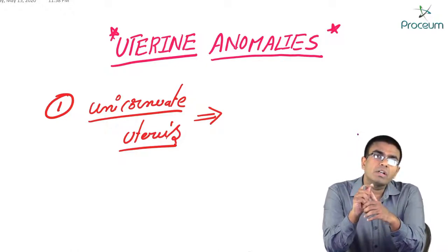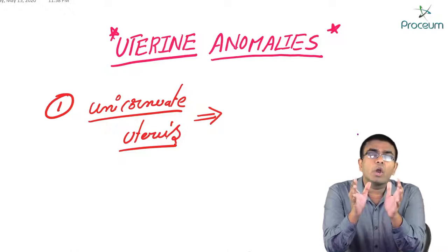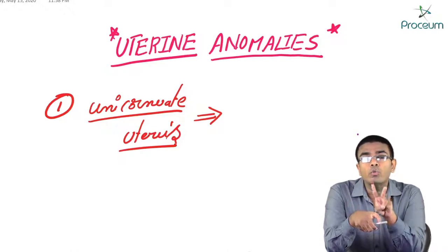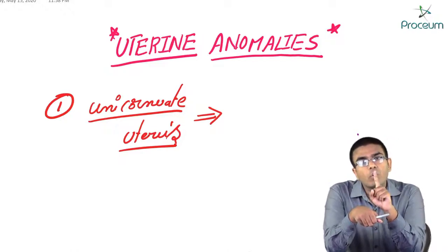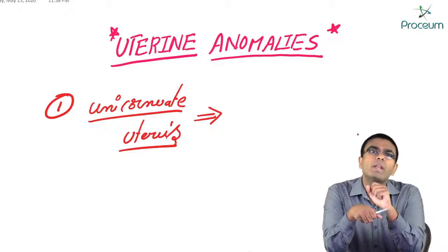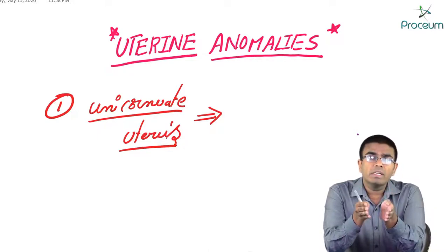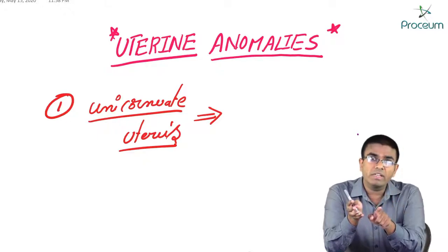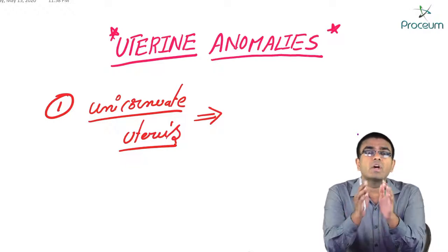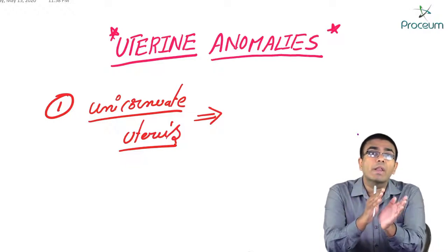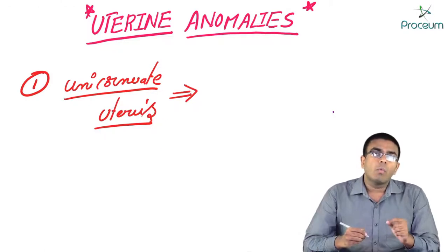For the proper formation of a normal uterus you need two Mullerian ducts. If there is only one Mullerian duct, the uterus formed is not normal, the cervix is not normal, and the upper two-thirds of the vagina is not normal. They are all half of the normal size.